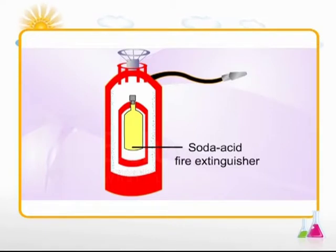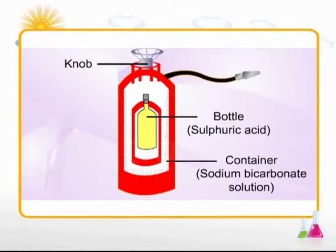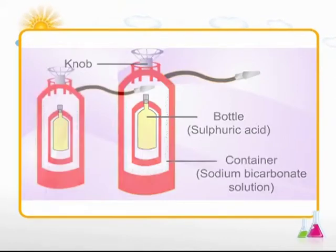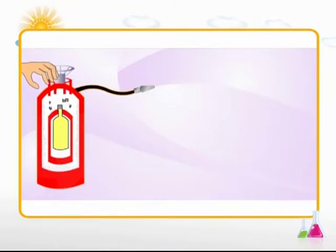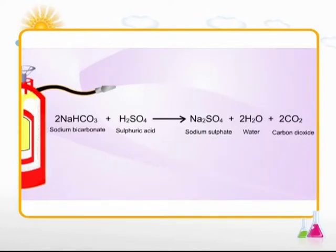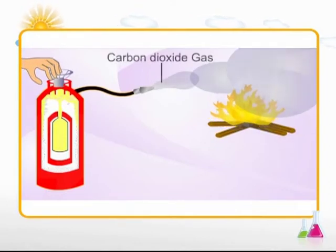A fire extinguisher is a portable container of chemicals that is used for extinguishing fire. There are different types of fire extinguishers. The simplest is the soda acid fire extinguisher, which is made up of three parts: container, bottle, and knob. The container has sodium bicarbonate solution and the bottle contains sulfuric acid. When the knob is struck, the bottle breaks and the sulfuric acid reacts with the sodium bicarbonate to liberate carbon dioxide gas. The carbon dioxide released forms a blanket around the fire and cuts off the oxygen supply.